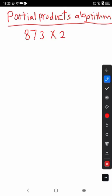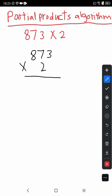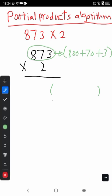We want to use the partial products algorithm to find the answer of 873 times 2. First, we write vertically 873 times 2. We will find the expanded formula of the number.